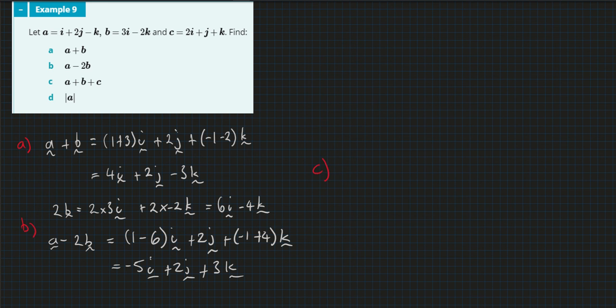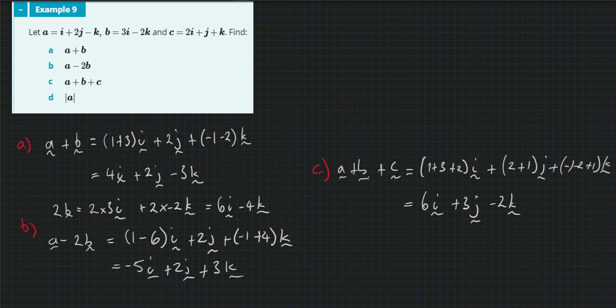Part C is A plus B plus C. So A plus B plus C equals 1 plus 3 plus 2 times i plus 2 plus 1 times j, minus 1 minus 2 plus 1 times k.